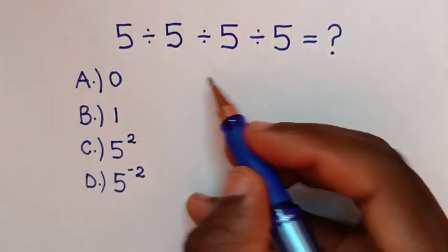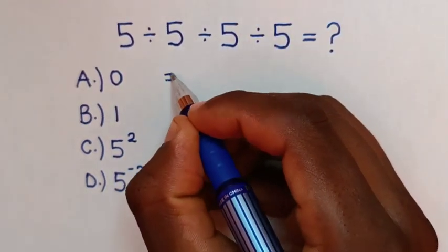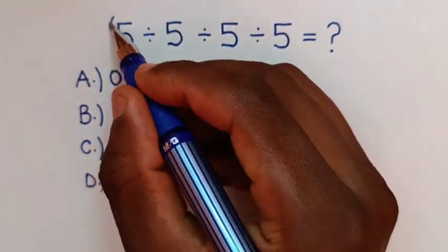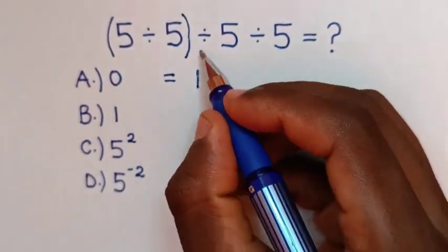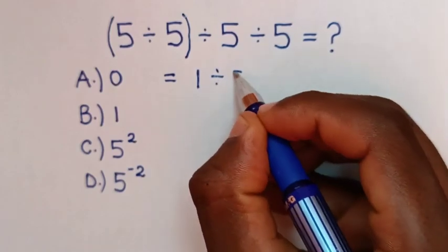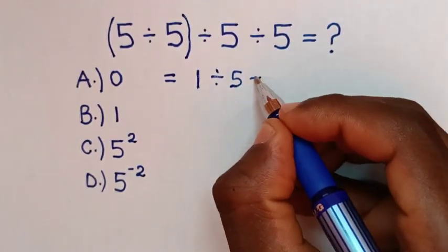So this expression will be equal to... In the first step, we will start with this first division. 5 divided by 5 is 1, then divide by 5, then divide by 5.